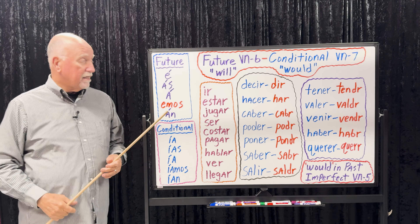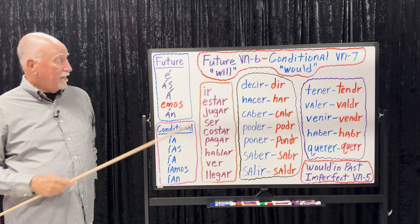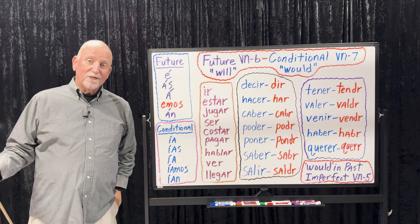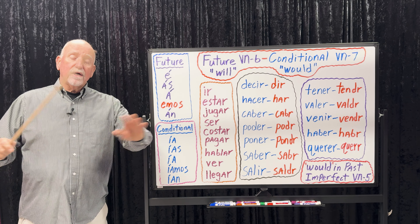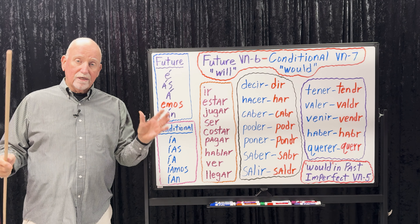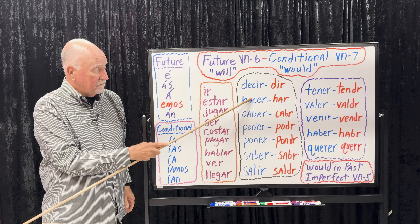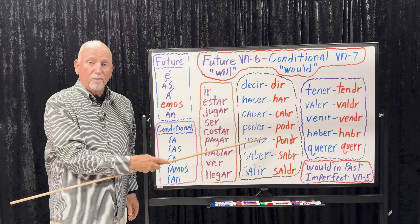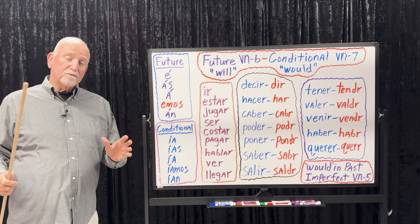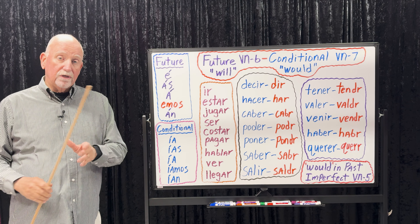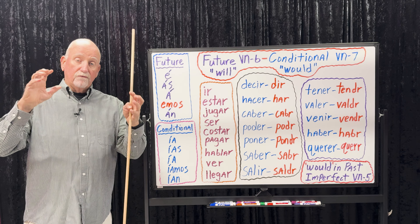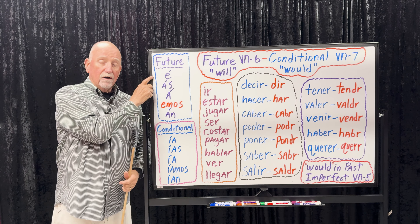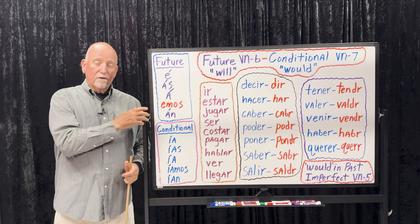Let's take a look at our verbs. There are no stem-changing verbs — there's nothing quirky about the future or the conditional except that they share the same irregulars. For all verbs in the future and the conditional, you take the infinitive — the zero form — and you add the ending. For future, the ending for AR, ER, and IR verbs is all the same.